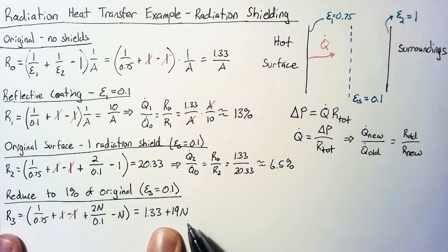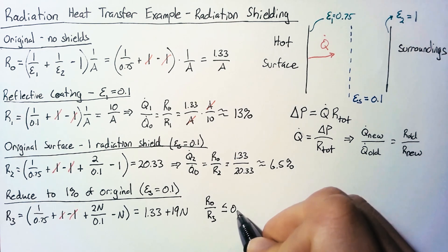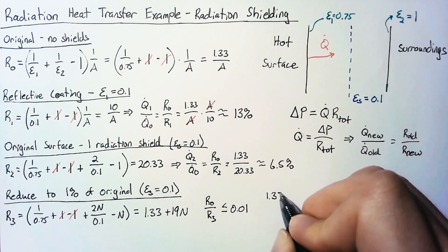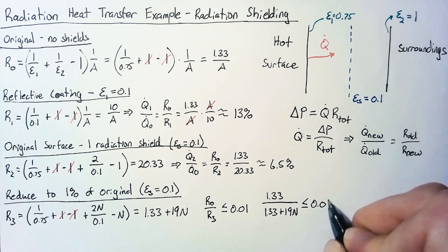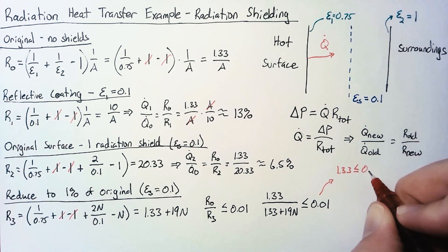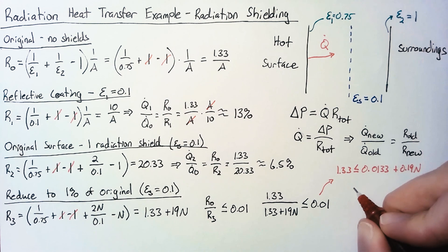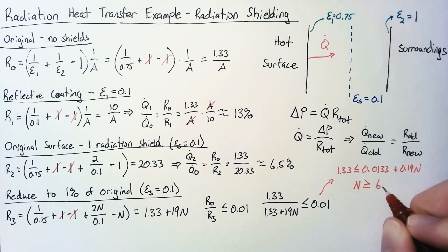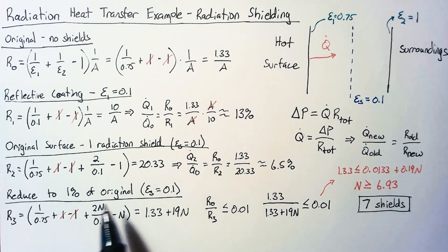We need to solve this so that R3 gives 1% of the original heat transfer, which means R0/R3 ≤ 0.01. R0 is 1.33, and R3 is 1.33 + 19n, so 1.33 / (1.33 + 19n) ≤ 0.01. Multiplying out, 1.33 ≤ 0.0133 + 0.19n, and with a little math we find n ≥ 6.93. In other words, we need 7 radiation shields in order to reduce our heat transfer to 1% of the original.